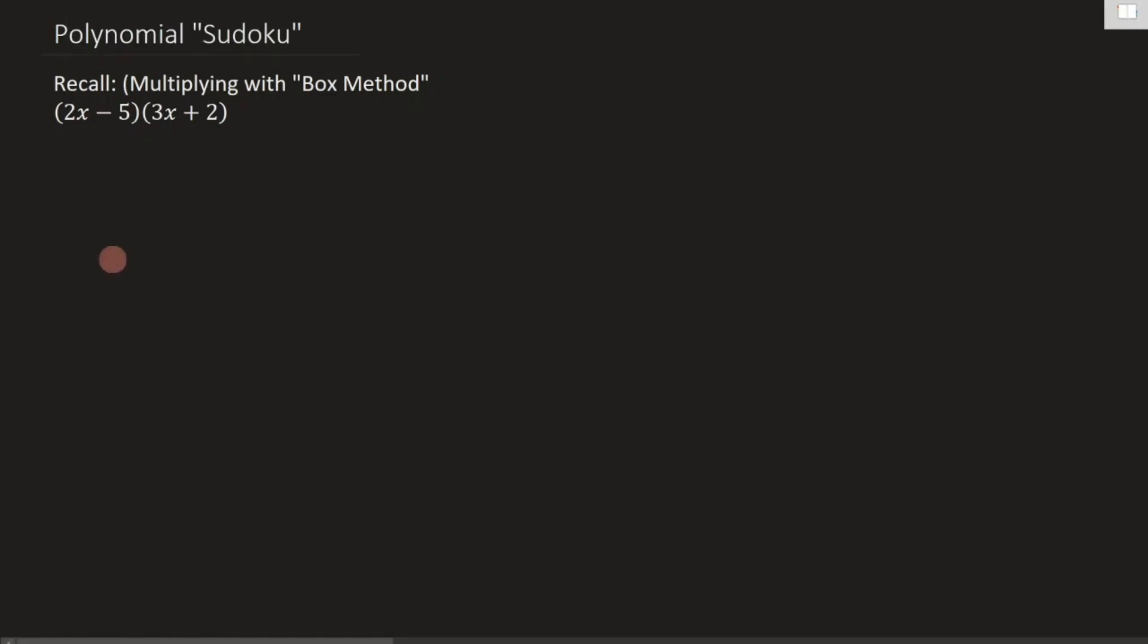So I'm going to start off here. I'm going to draw a box and my box is going to be two by two. And the reason my box is going to be two by two is because I've got two terms in my first binomial and I've got two terms in my second binomial. So I fill in each of those terms along my edges. So this is 2x and this is minus 5 and then my other binomial is 3x plus 2.